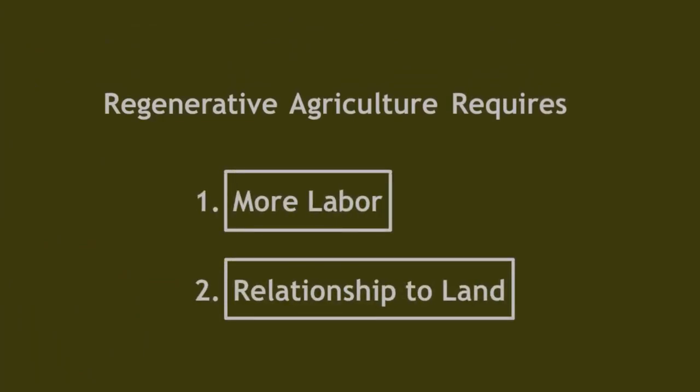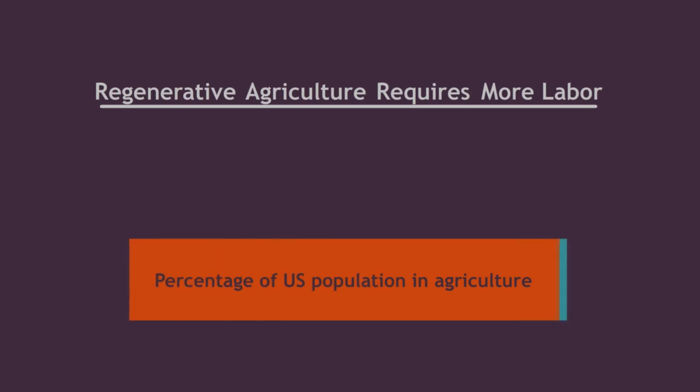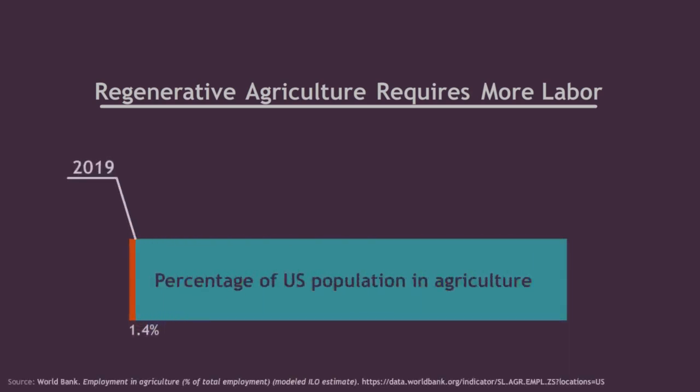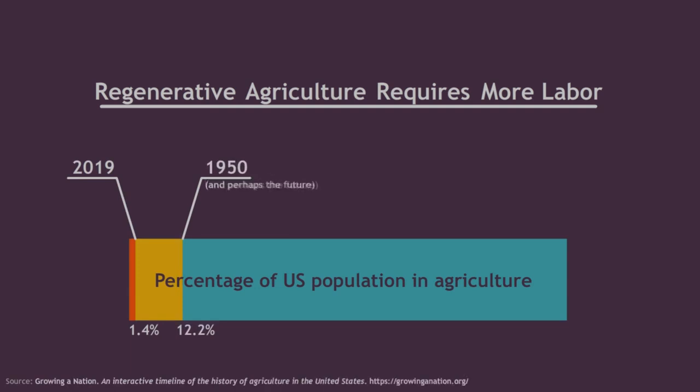There's two things, though, that they do require that represent a profound shift in our agricultural system and our entire society. The first is that they are more labor-intensive. In the United States, approximately 1% of the population is directly engaged in farming. That might have to go up to 10%, as it was in 1950. And maybe if you include gardens, maybe go up to 50%.